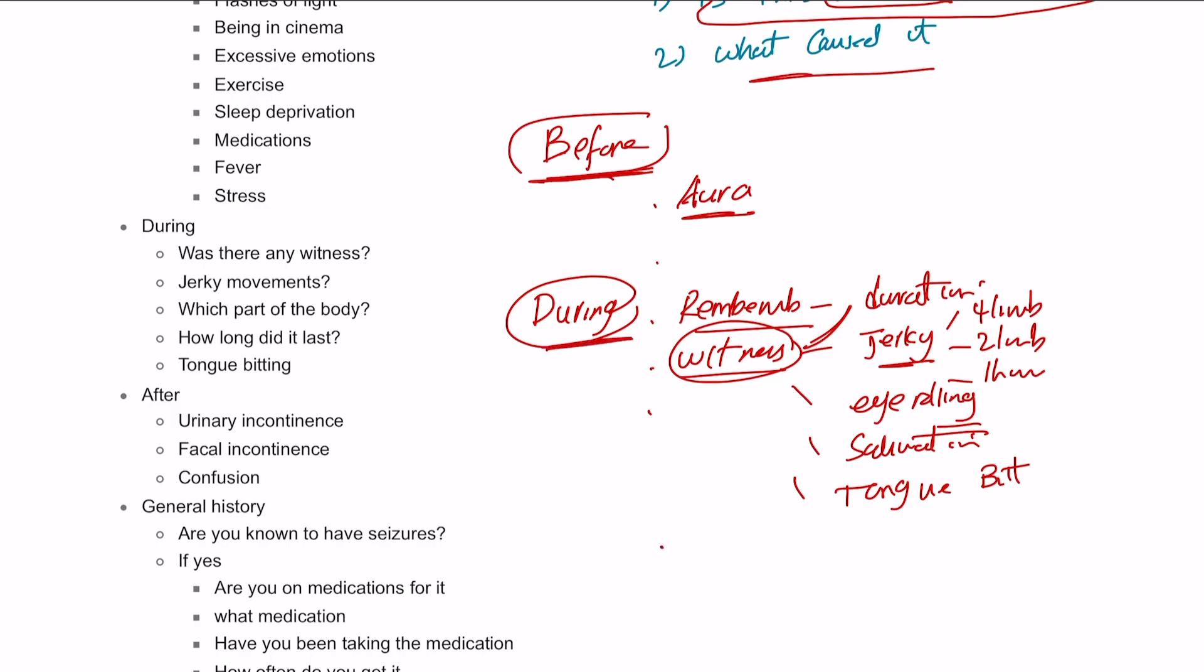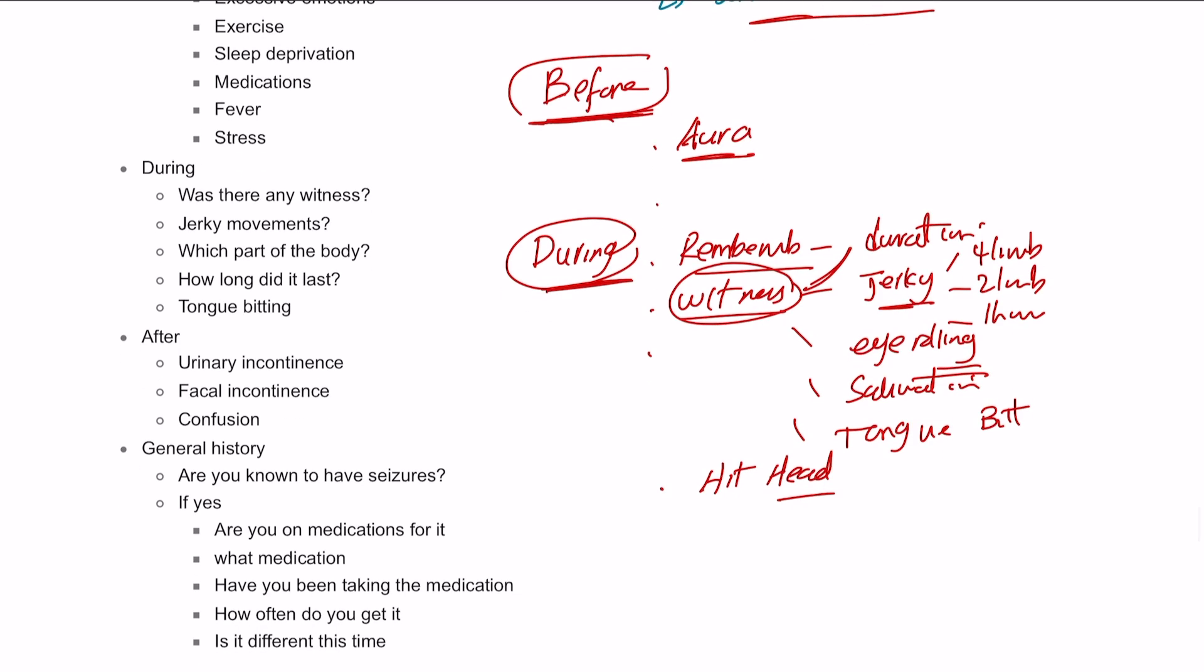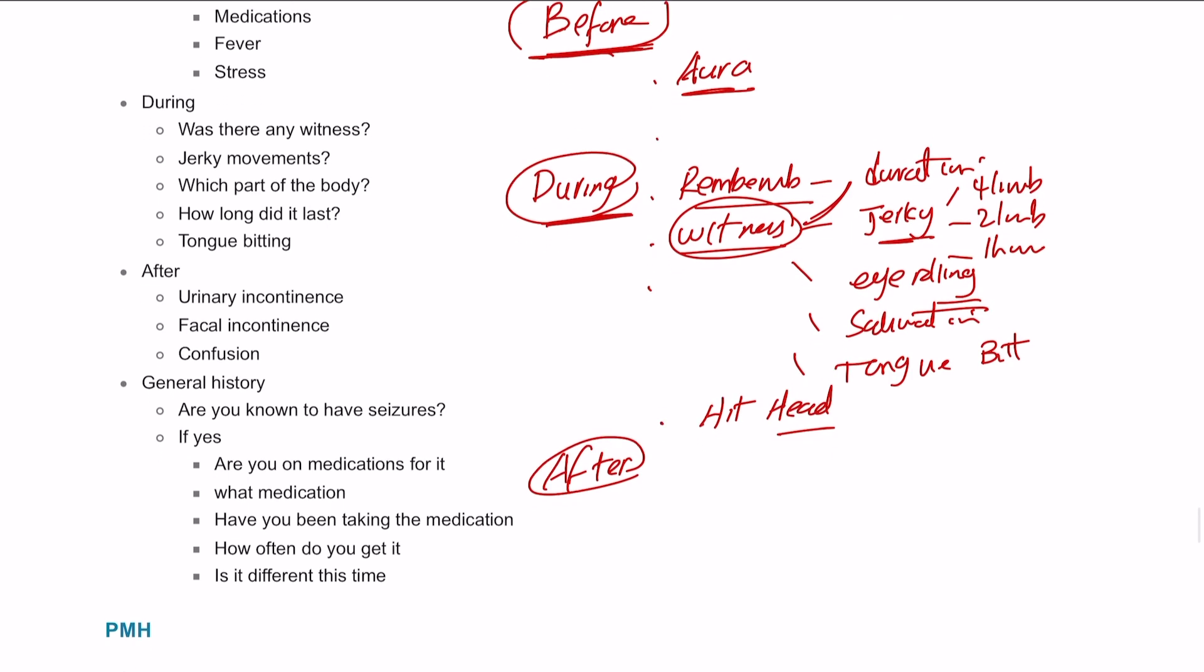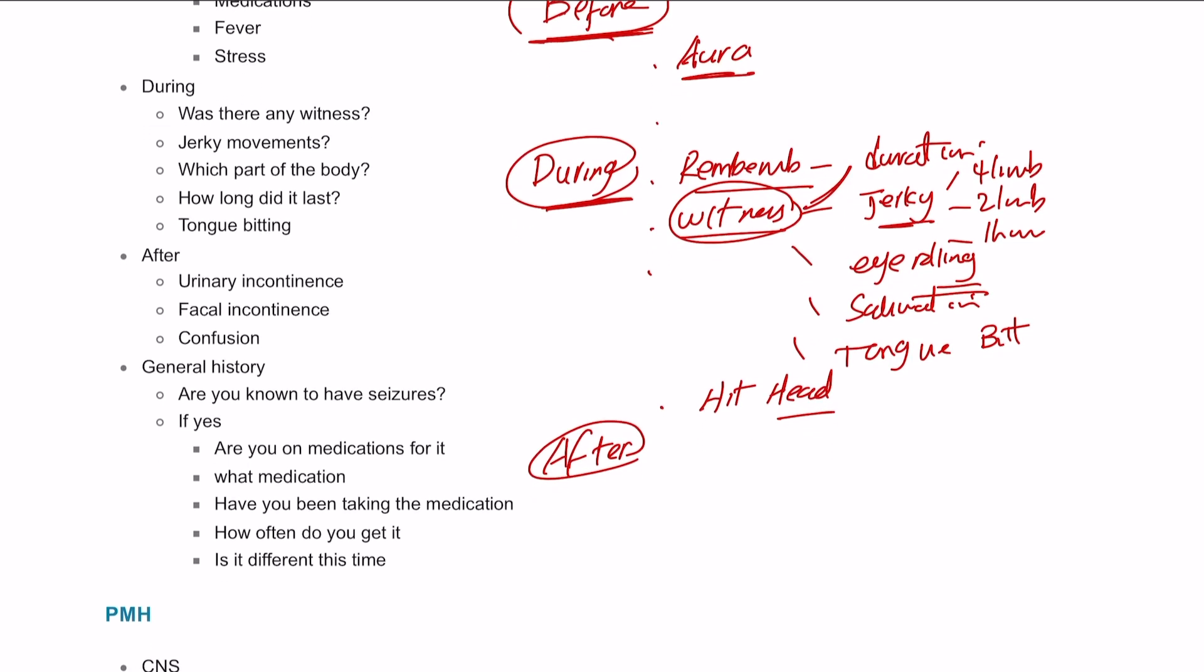Obviously, the patient, if they were standing and they fell down, they might hit their head. You can ask, did you hit your head during that seizure or not? And then after the seizure, what happened after it? Did you call the ambulance? Did you go to the hospital? Did you have any medication after that or not? And then after the seizure, we can also ask about the urinary incontinence, the fecal incontinence, and were you confused? Did you manage to remember what happened or not?